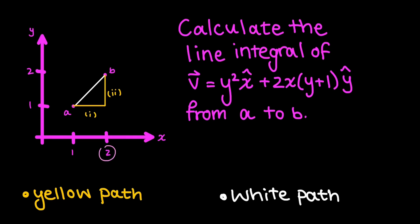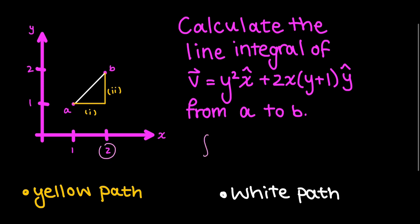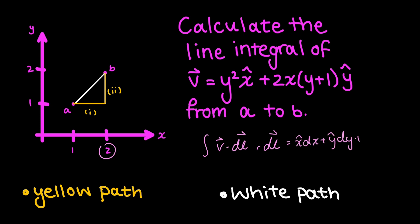Let's calculate the line integral of the given vector function from a to b. A line integral is the integral of the vector function times dl, where dl is the infinitesimal displacement vector defined as x-hat dx plus y-hat dy plus z-hat dz, assuming we're in three-dimensional space. The integral is evaluated along a path from points a to b.